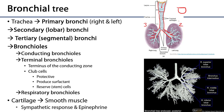Branching off the secondary bronchi are the tertiary bronchi, also known as segmental bronchi, because they feed into bronchopulmonary segments, which we'll discuss shortly. Looking at this endocast of a bronchial tree in posterior view, we can see the trachea, the main stem bronchi — left and right — and then two, three, and four secondary bronchi. All of the tertiary bronchi can be seen coming off those secondary bronchi.